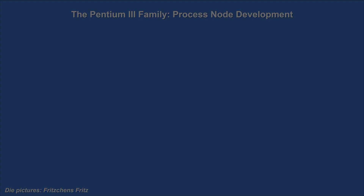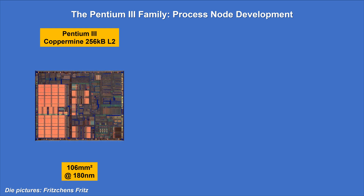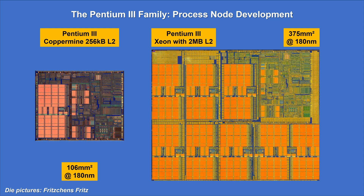An interesting comparison: on the left, the standard Coppermine is visible, produced at 180 nm — the same node as the Pentium 3 Xeon on the right. This Xeon version, however, features 2 MB second level cache, so 8 times that of the standard Coppermine version. What a gigantic chip this is!